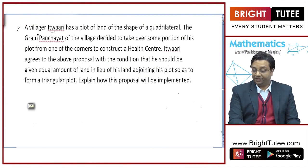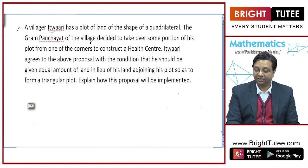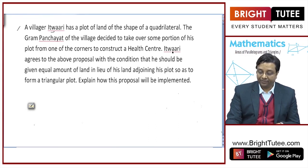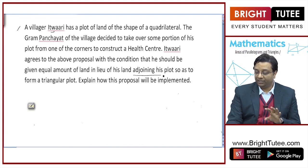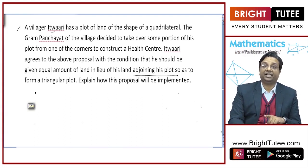In this question, a villager Itavari has got a plot of land of the shape of a quadrilateral. The gram panchayat of the village decided to take over some portion of his plot from one of the corners to construct a health center. Itavari agrees to the above proposal with the condition that he should be given equal amount of land in lieu of his land adjoining his plot so as to form a triangular plot.